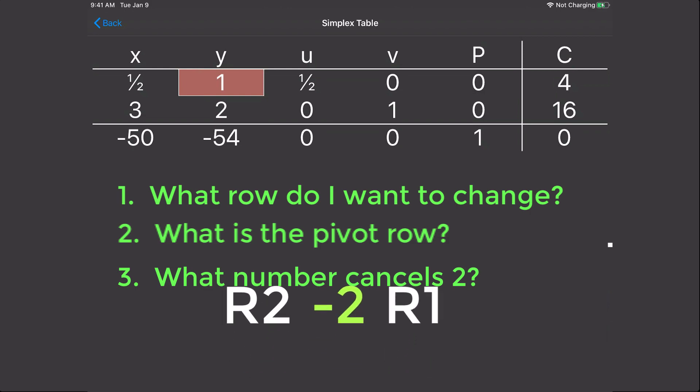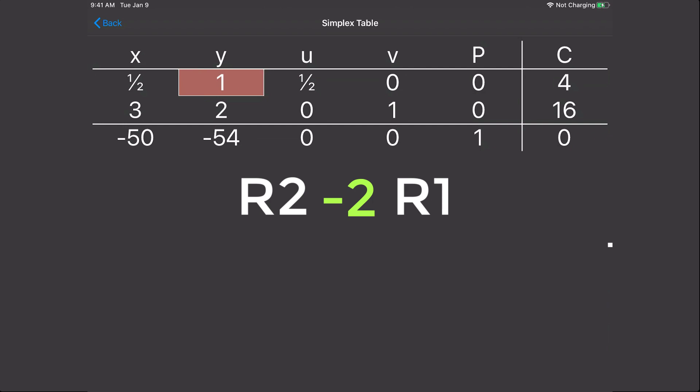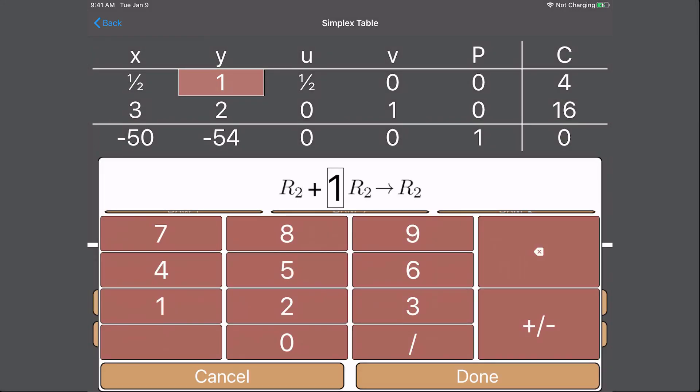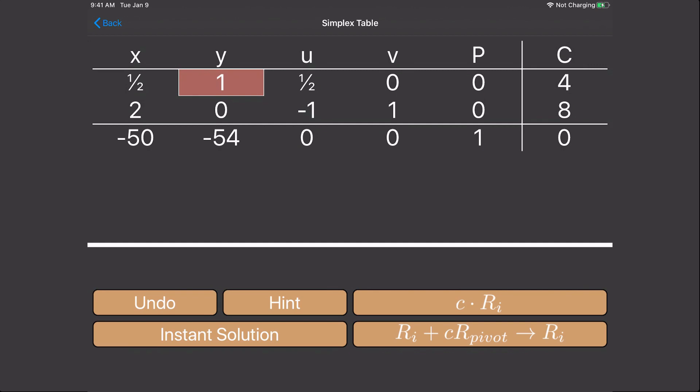So now our operation is row 2 minus 2 times row 1. Now the app will calculate this automatically, but if you want to do this by hand, you do the following. Write all the numbers from row 2 below row 2. Then write all the numbers from the pivot row under row 1. Now don't forget to include the negative 2 that's going to show up in every operation. Evaluate each of these. 3 minus 2 times 1 half is 2. 2 minus 2 times 1 is 0. 0 minus 2 times 1 half is negative 1. 1 minus 2 times 0 is 1. 0 minus 2 times 0 is 0. And finally, 16 minus 2 times 4 is 8. So let's check it with the app. We have row 2 minus 2 times row 1. It looks like everything matches up. Perfect.